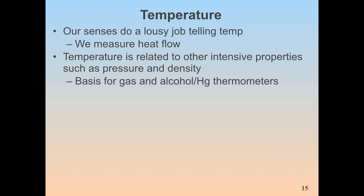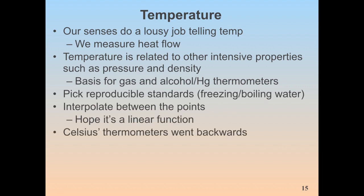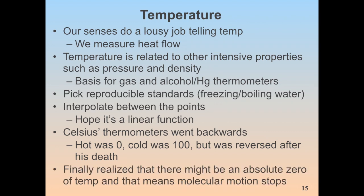This is the whole reason why we can use gas and alcohol thermometers: pick a reproducible standard, such as the freezing and boiling points of water, and interpolate between the points. A historical footnote: when Celsius originally developed his thermometer, it went backwards — 100 degrees was the freezing point and zero was the boiling point. After his death, other scientists reversed it to the system we use today, and they also realized about absolute zero once they started extrapolating the data.